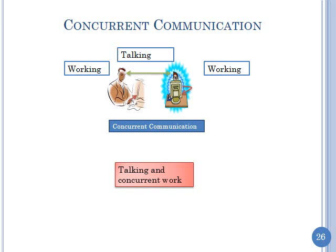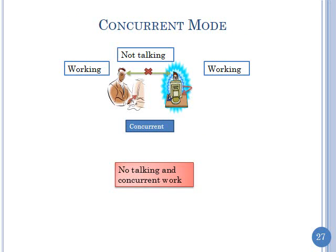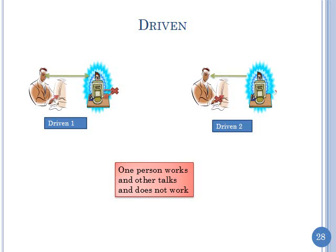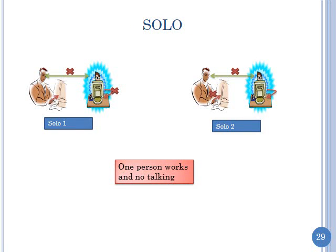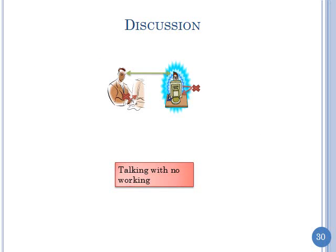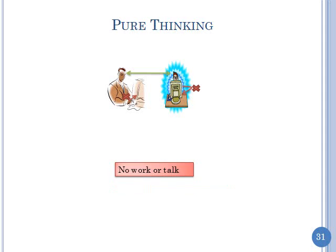In one coupling mode — the busiest — both users are working and talking to each other: that's concurrent communication mode. If only one person is working and the other is talking, that's like pair programming with a driver and observer — driver-one or driver-two depending on who is driving. You could be working without talking — one person working, the other not, with no talking — that's solo mode. And you could be just talking without working — that's discussion mode.